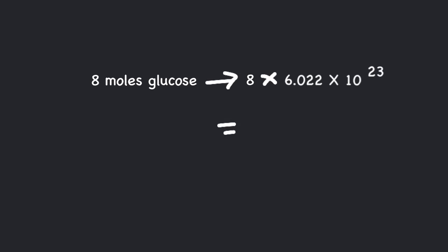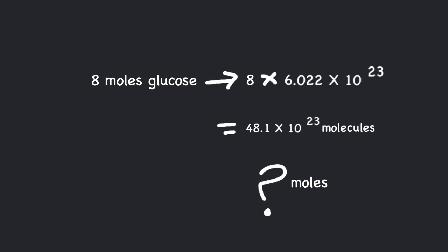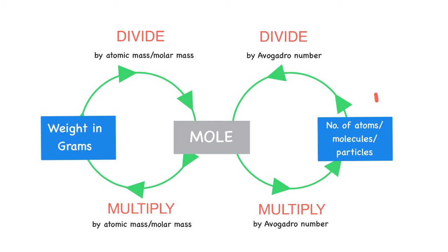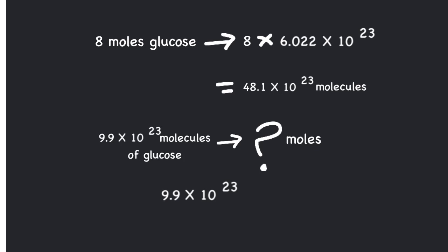How many moles is 9.9×10²³ molecules of glucose? Simply divide by Avogadro's number when converting from number of particles to moles. So 9.9×10²³ ÷ Avogadro's number = 1.66 moles.